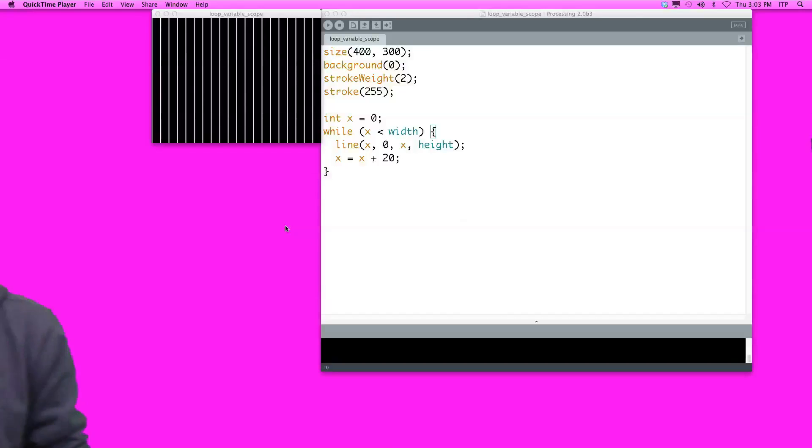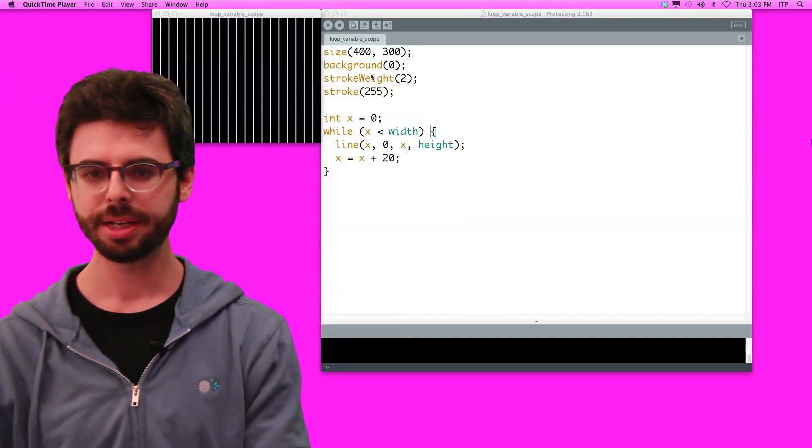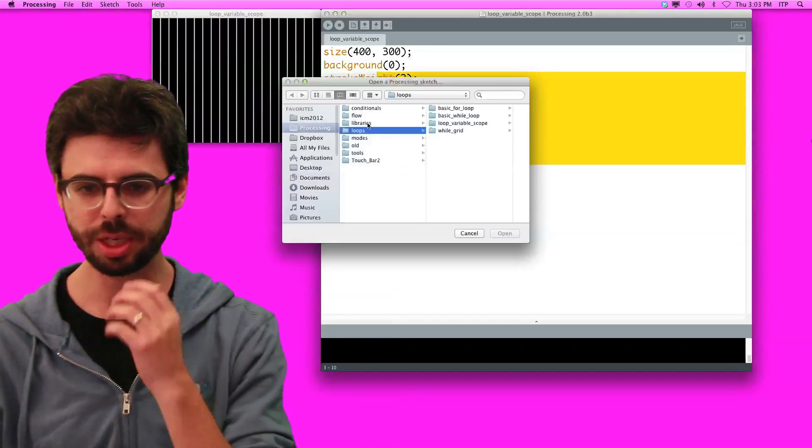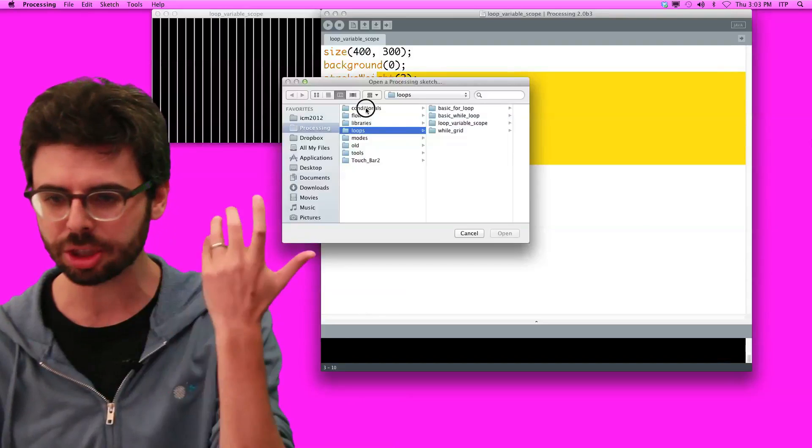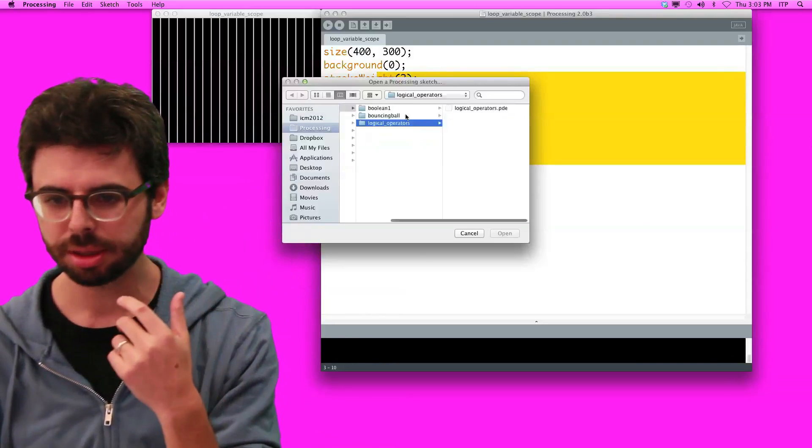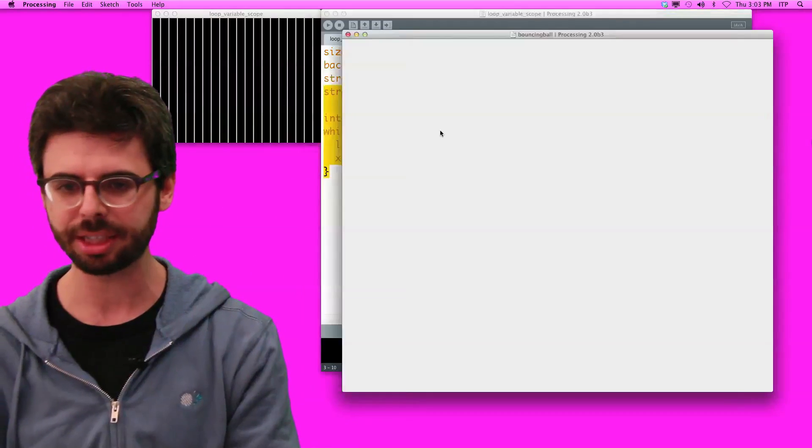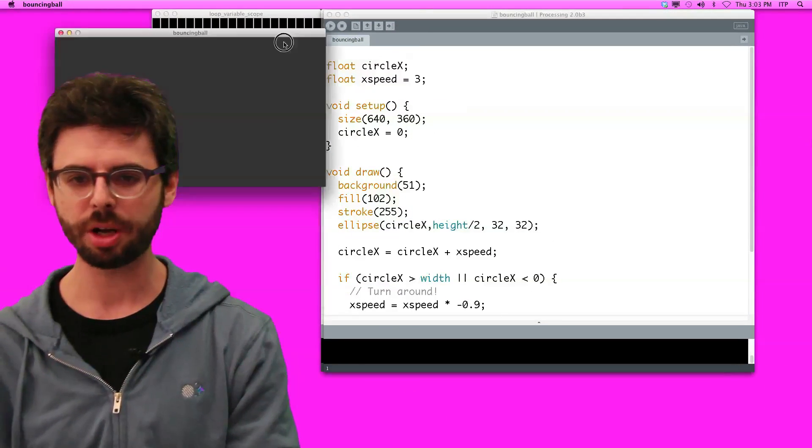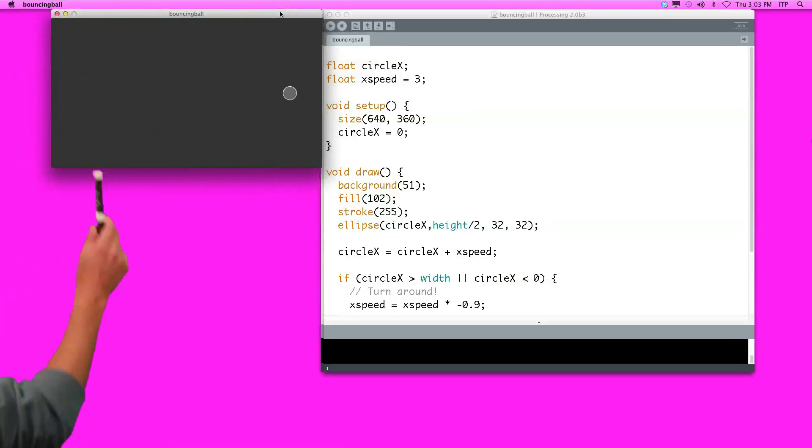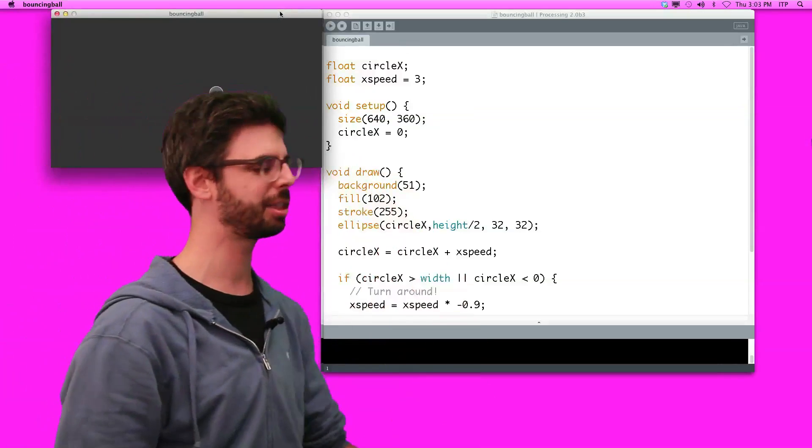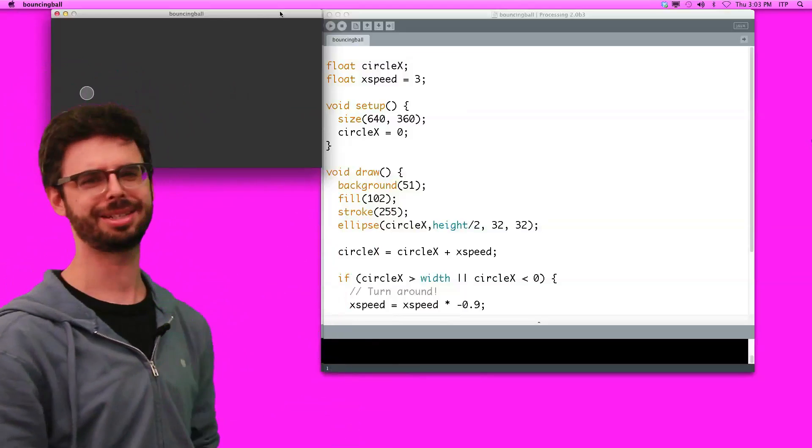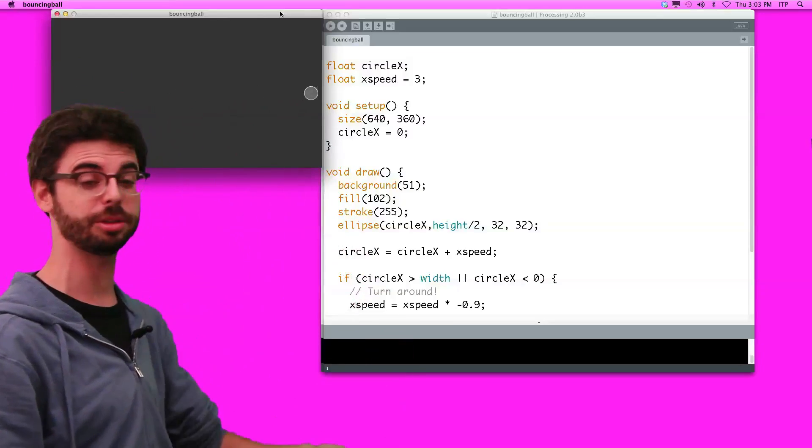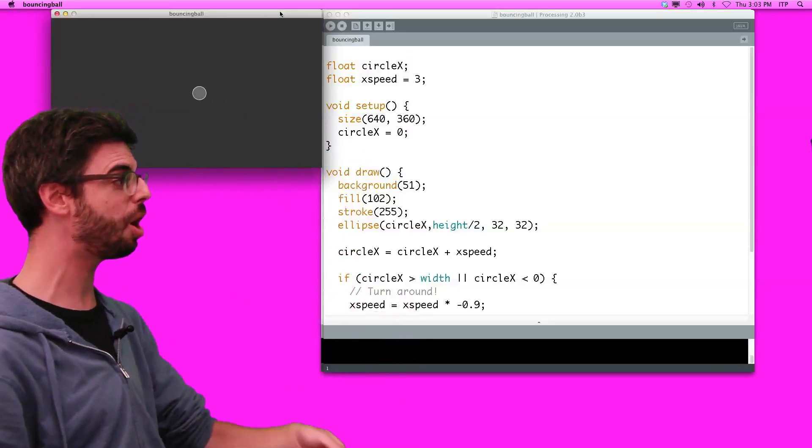OK, so I actually have an example prepared that I was going to use for variable scope. But I'm actually just going to open up a sketch that we did with conditionals, bouncing ball. Let's open up this bouncing ball sketch, and let's run it. So we can see this bouncing ball sketch has two variables. It has circle x and x speed. If I'm standing here, I mean, yeah, you can see me. Nothing you need to see me. Whatever. It has circle x and x speed. Two variables, global variables. We're using them in setup. We're using them in draw all over our code.